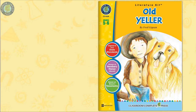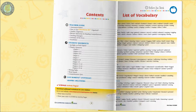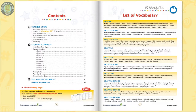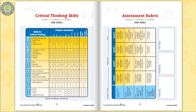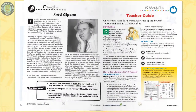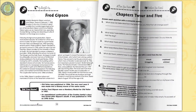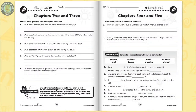This literature kit on Old Yeller by Fred Gipson provides a variety of activities in an easy-to-use format. 55 pages chalked full of before-you-read worksheets for each chapter section, along with vocabulary prompts to prepare your students for the reading, with rubrics, teacher guide, and author biography.